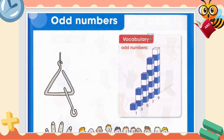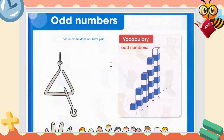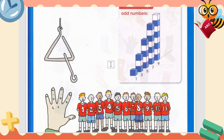Then we have odd numbers — the things that don't have a pair. Odd numbers do not have a pair; they are single. Odd numbers are the opposite of even numbers. For example: 1 doesn't have a pair. 3 — if two blocks can make a pair, what about the single one? They are not paired. 5 — also not a pair. 7 — not a pair. 9 — not a pair.